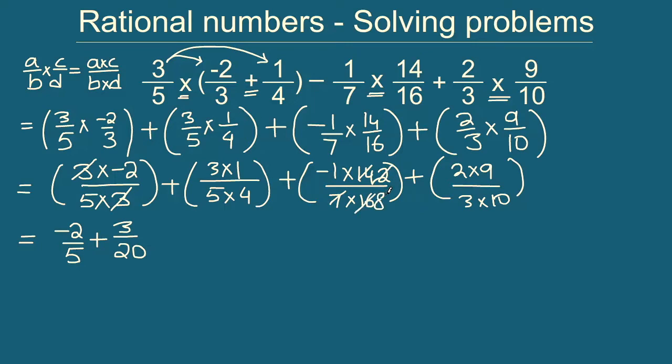Clearly here 7 times 1 is 7 and 7 times 2 is 14, and 2 times 1 is 2 and 2 times 8 is 16. So this will become, don't forget the minus sign here, this will be minus 1 by 8, right, because we are left with 8 here. Plus now here what we can do, we can say 3 times 1 is 3 and 3 times 3 is 9, and this will be 5. So we are going to have 3 by 5.